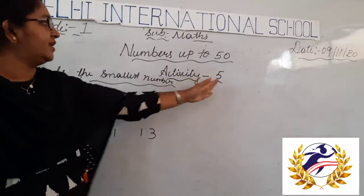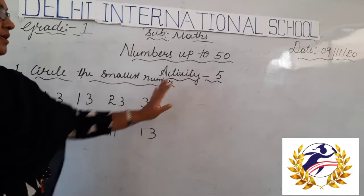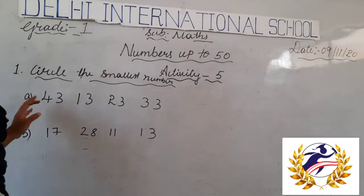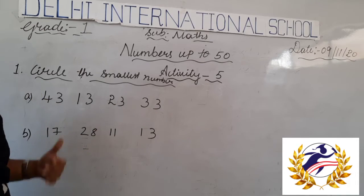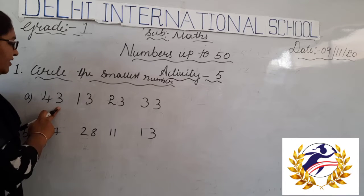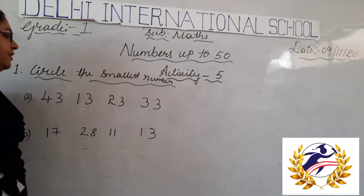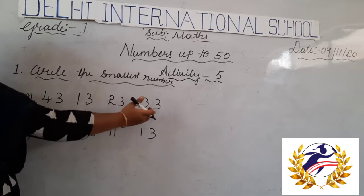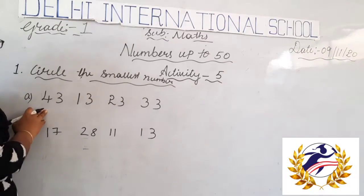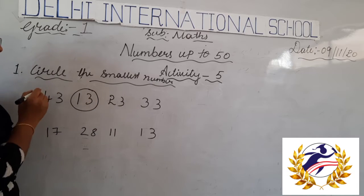Today we will move to activity 5. We have to circle the smallest number. We have to look at these numbers and circle the smallest number. The numbers given are 43, 13, 23, and 33. Which is the smallest digit among these numbers? That is 13. So we have to circle 13.